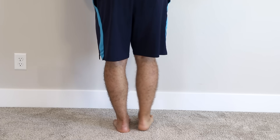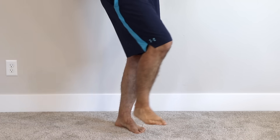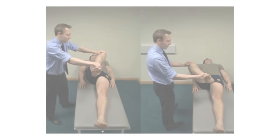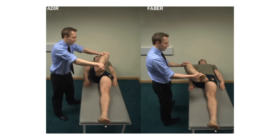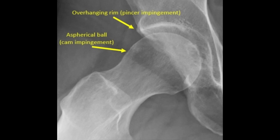Diagnosing hip impingement requires three things: symptoms, positive tests, and findings on X-ray or MRI. The symptoms include reduced range of motion of the hip, clicking, catching, or locking, and it's usually worse with squats or lunges. There should be positive findings on orthopedic tests such as the FADER and FAVIER, and relevant bony changes on X-ray or MRI. If hip impingement sounds like what you're suffering with, click the video card in the upper right to start managing it on your own.